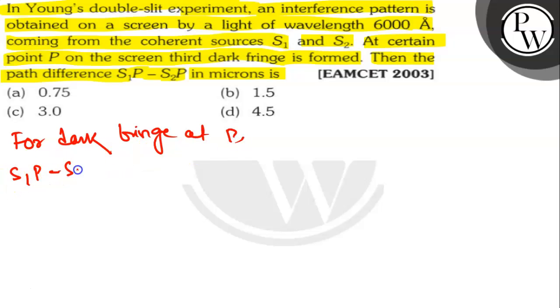S1P minus S2P is equal to delta I into (2n minus 1) lambda by 2.